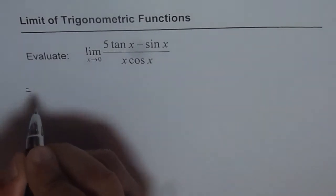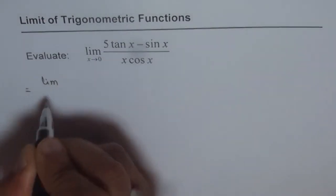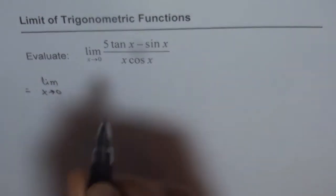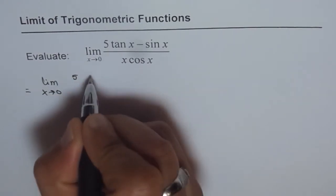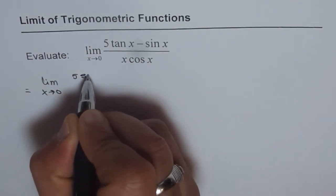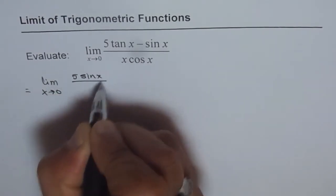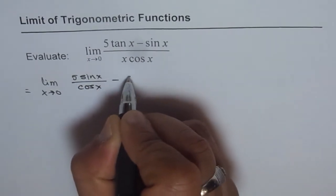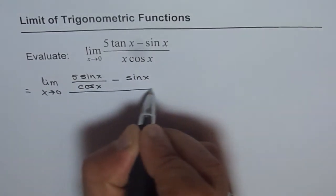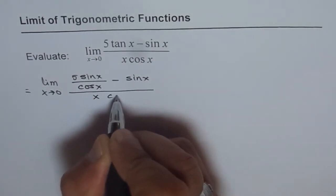We can write this as limit x approaches 0. Tan we can write as sin over cos. So write 5 times sin x over cos x minus sin x over x cos x.